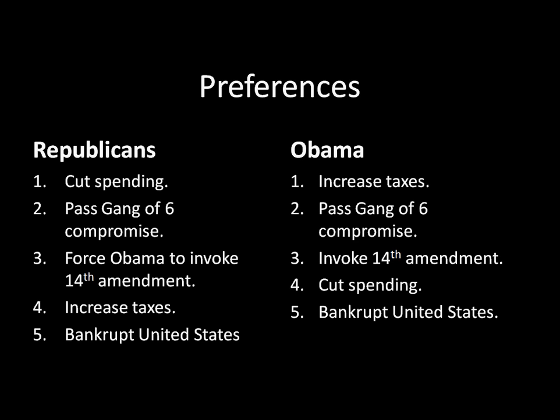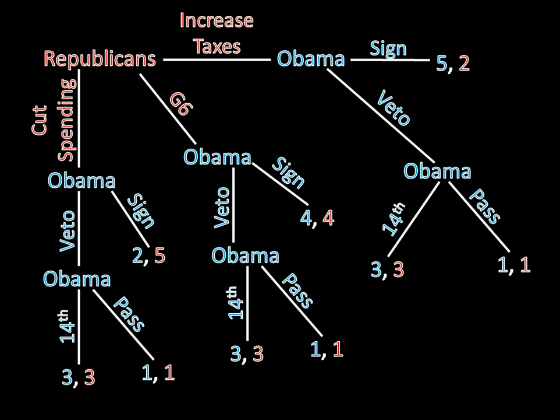Given those preferences and those moves, we can create a game tree that will represent those moves and those preferences, and I've done that here. Basically, the Republicans choose whether to cut spending, to go with the Gang of Six bill, or to increase taxes. Obama gets those bills and decides whether to veto or sign them. And if he chooses to veto, then he chooses whether to go with the 14th Amendment option or pass on that option and watch the United States go bankrupt.